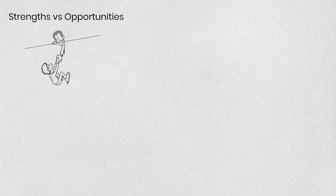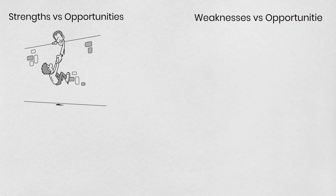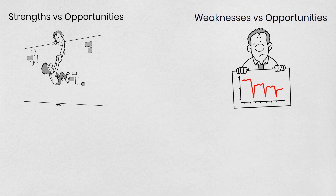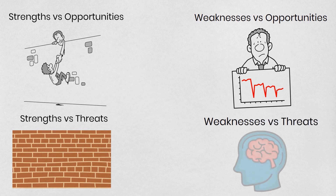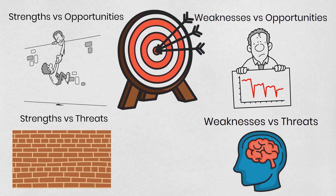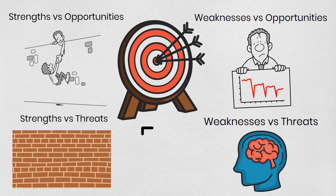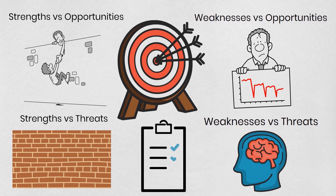Number four: once the information has been gathered, analyze it to assess the interaction of the elements across four different quadrants. Quadrant 1 — Strengths vs. Opportunities: how does the company use these strengths to take advantage of these opportunities? Quadrant 2 — Weaknesses vs. Opportunities: how does the company overcome the weaknesses that prevent it from taking advantage of its opportunities? Quadrant 3 — Strengths vs. Threats: how does the company use its strengths to reduce the likelihood and impact of the threats? Quadrant 4 — Weaknesses vs. Threats: how does the company address the weaknesses that will enable it to avoid or overcome the threats? Number five: build strategies and goals depending on the results of the SWOT analysis. It is also important to review and update the results on a regular basis to ensure that the organization's strategies remain relevant and effective.